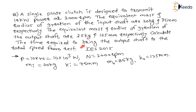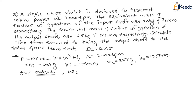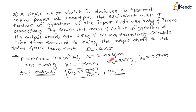We need to calculate the time required to bring the output shaft to the rated speed from rest. So we have to find time for the output shaft. The final angular speed ω₂ = 2πN/60 where N = 2000 rpm, and the initial angular speed ω₁ = 0 (from rest).